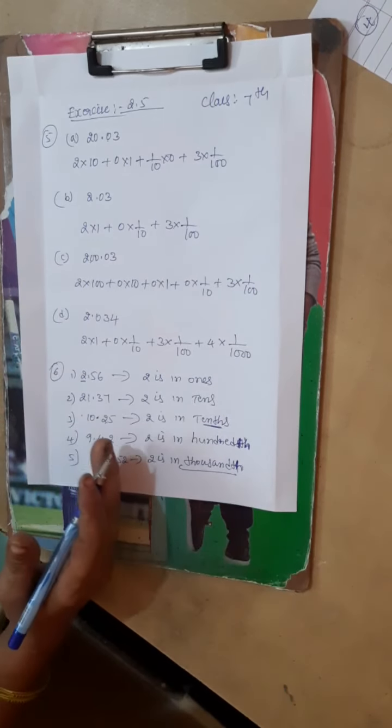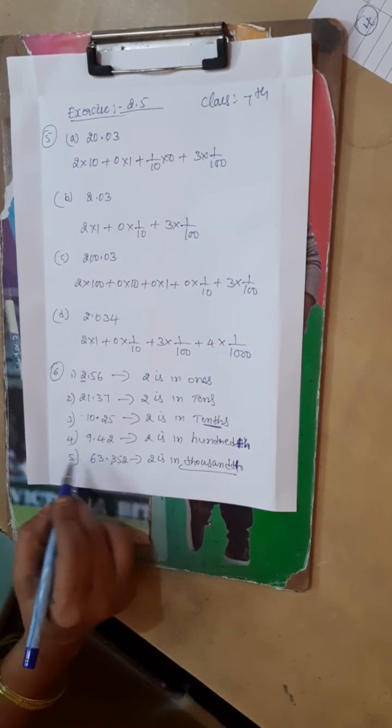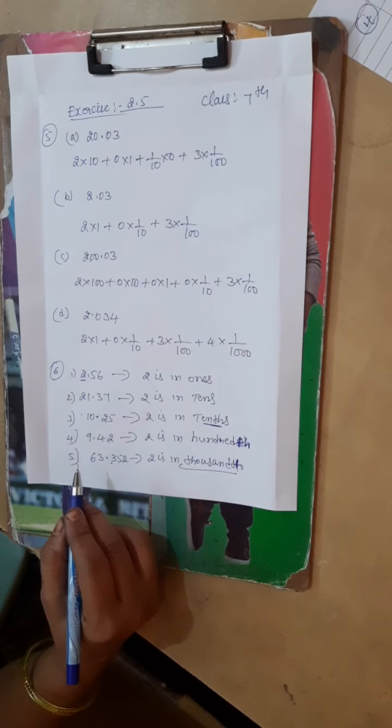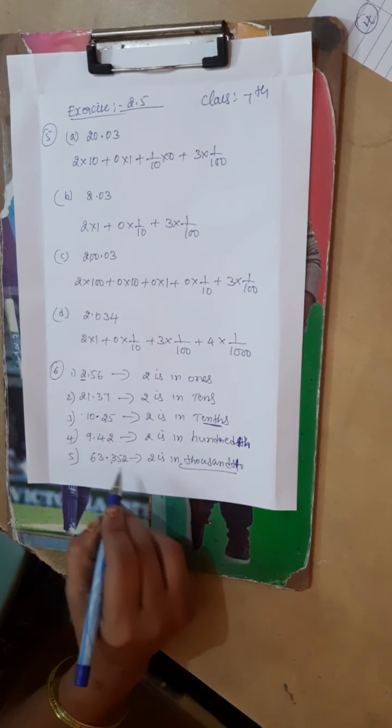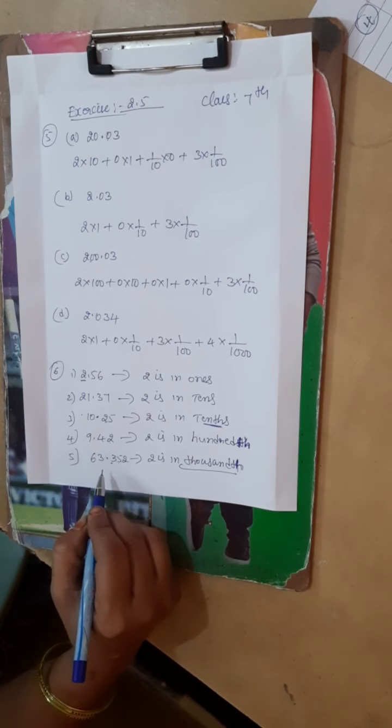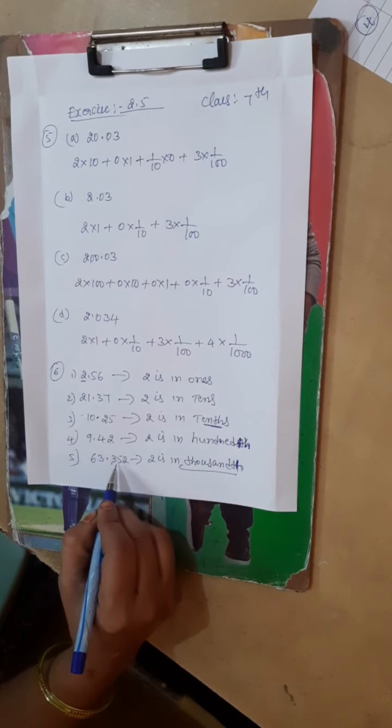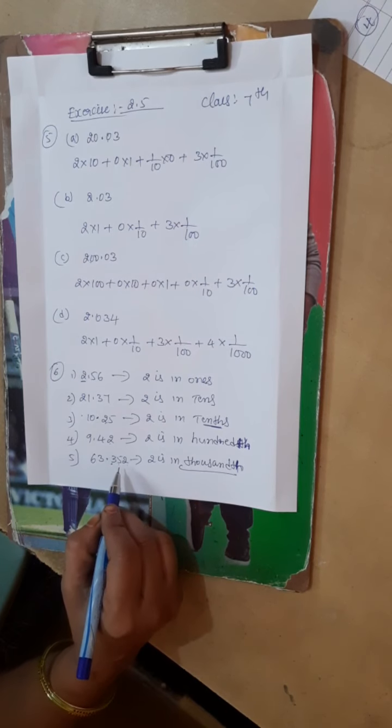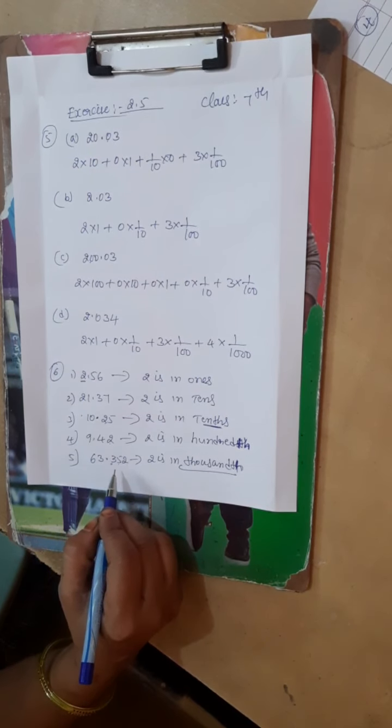So point in the decimal points, back side go, left go. Ones, tens, hundreds, thousands something. Right side go, direct to tenths start: tenths, hundredths, then thousandths. Okay, super cool.